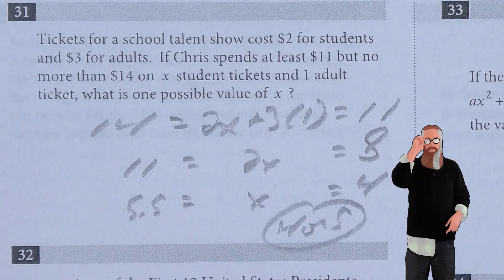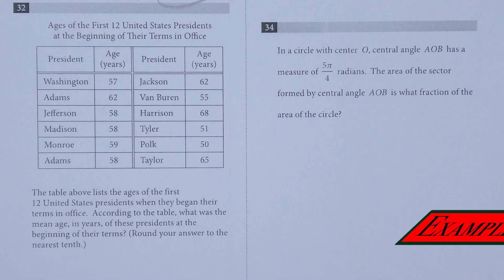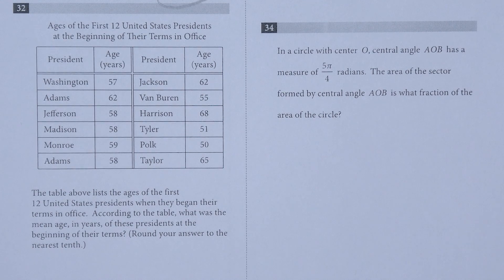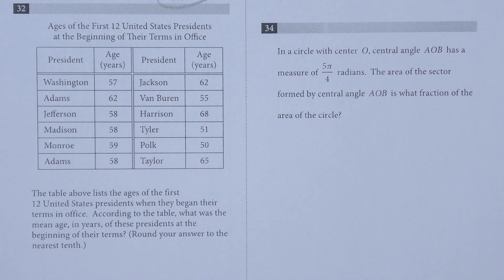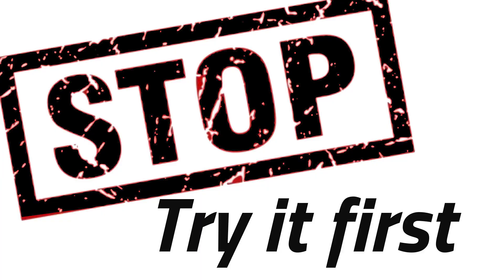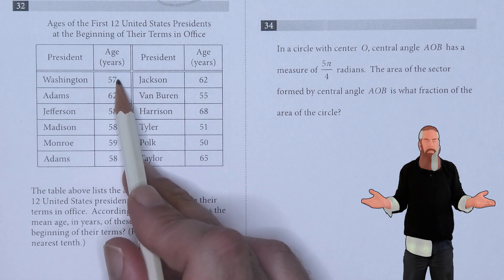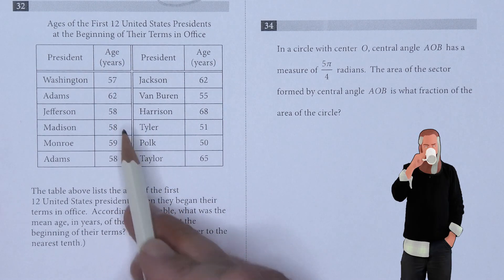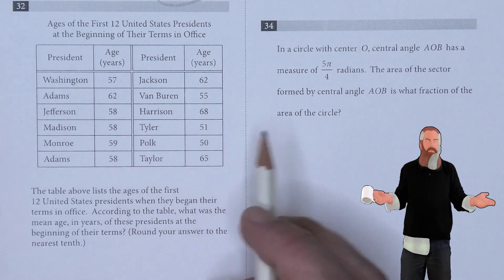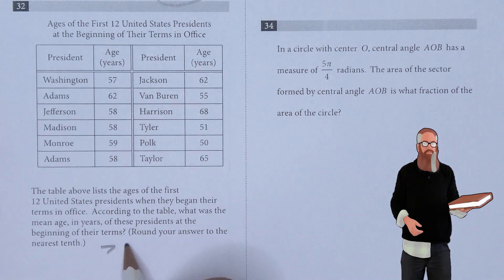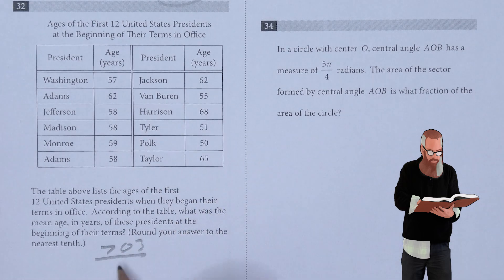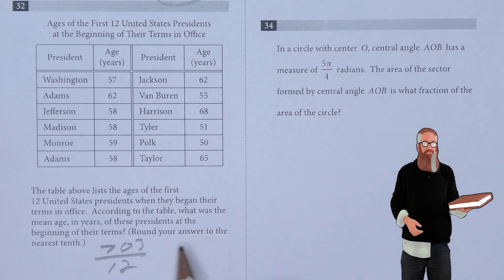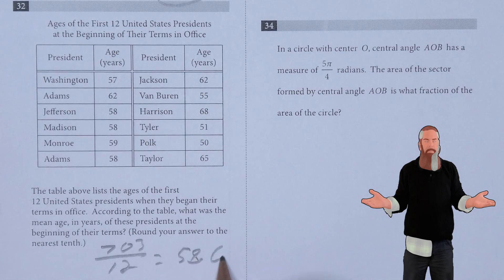The table lists the ages of the first 12 United States presidents when they began their terms in office. What was the mean age of these presidents, rounded to the nearest tenth? Adding up all the values — 57, 62, 58, 58, 59, and so on — gives a sum of 703. Dividing by 12 gives a mean of 58.6.